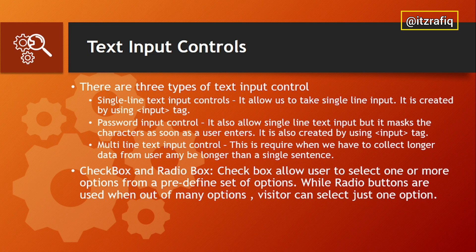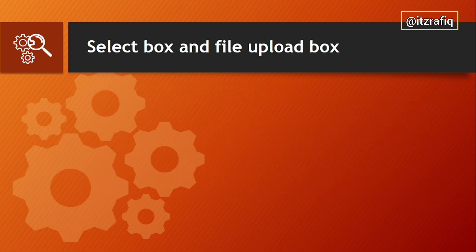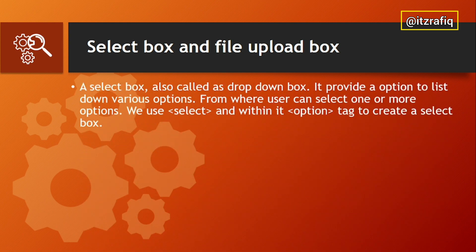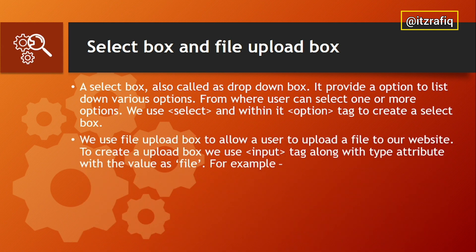A select box, also called a drop-down list or drop-down box, provides a list of options from which the user can select one or more. We use the select tag along with the option tag to create a select box. The fieldset element is used to group related controls of a form, and we use the legend tag to define the title of the group. The file upload box allows the user to upload a file to the website. We use the input tag with type attribute set to 'file'.